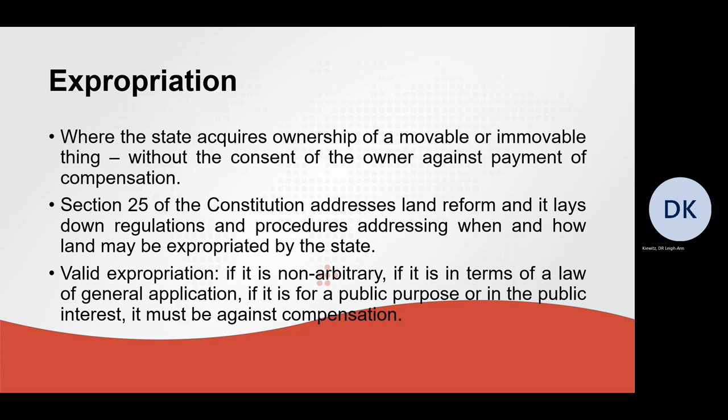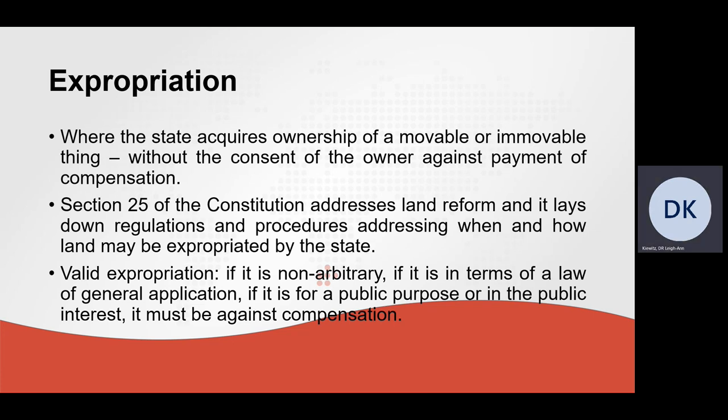Another example of original acquisition of ownership is expropriation, where the state acquires a movable or immovable thing without the consent of the owner against payment of compensation. Section 25 of the Constitution addresses land reform and lays down regulations and procedures addressing when and how land may be expropriated by the state. A valid expropriation must be non-arbitrary, in terms of a law of general application, for a public purpose or in the public interest, and must be against compensation.